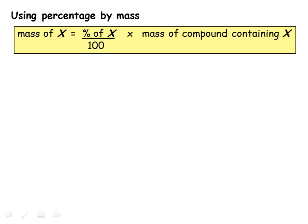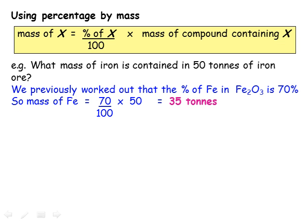Now that we can work out the percentage of an element in a compound, we can apply this to find what mass of that element we would have in a certain mass of the compound. In general, mass of element X equals the percentage of X divided by 100, times the total mass of the compound. Going back to our iron ore example, iron(III) oxide is 70% iron, so if we had 50 tonnes of iron(III) oxide, it contains 70% of 50 tonnes, which is 35 tonnes of iron.